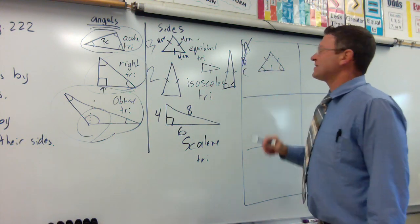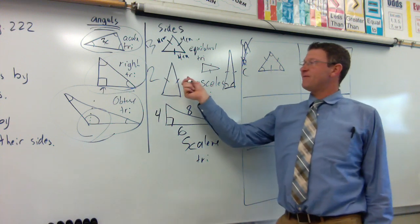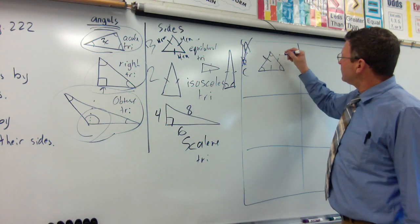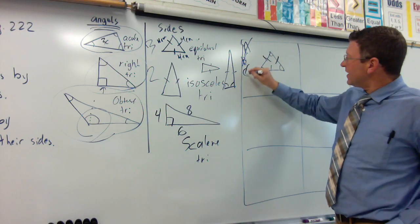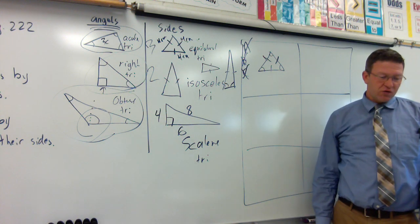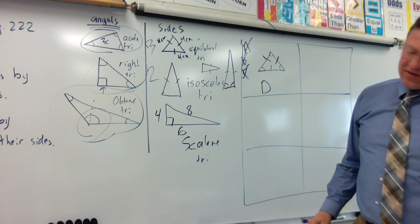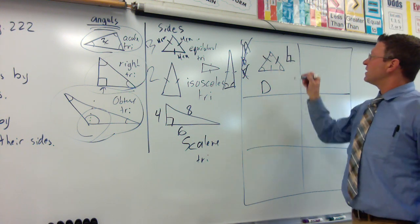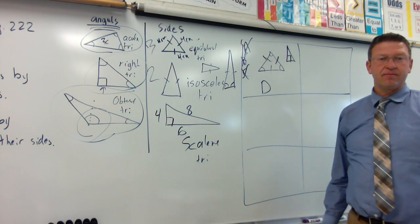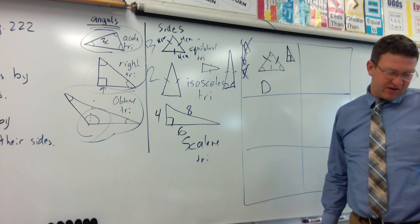Look at C. C says isosceles. Isosceles says it has to have two sides the same. These two sides are the same. It could be an isosceles triangle. So, the only one that it couldn't be is D. Obviously, it's not a right triangle because a right triangle would have a right angle in it. Example number one, our answer is D.